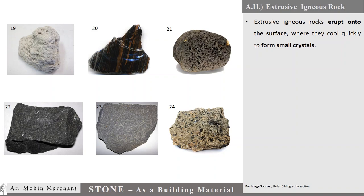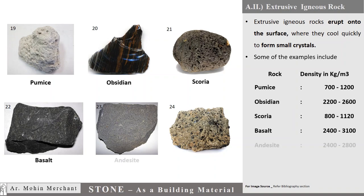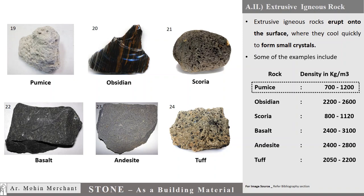Extrusive igneous rocks erupt onto the surface, where they cool quickly to form small crystals. Examples include Pumice, Obsidian, Scoria, Basalt, Andesite, and Tuff. Density of these rocks varies from 700 to 3100 kg per cubic meter.